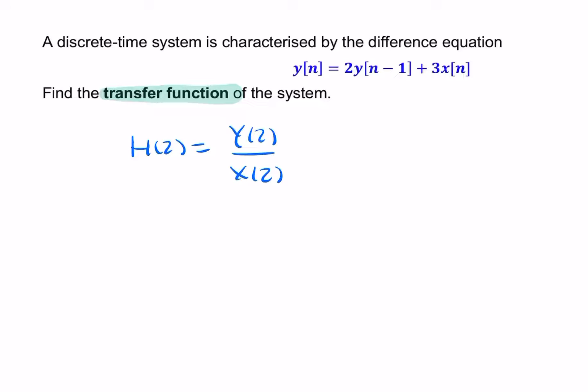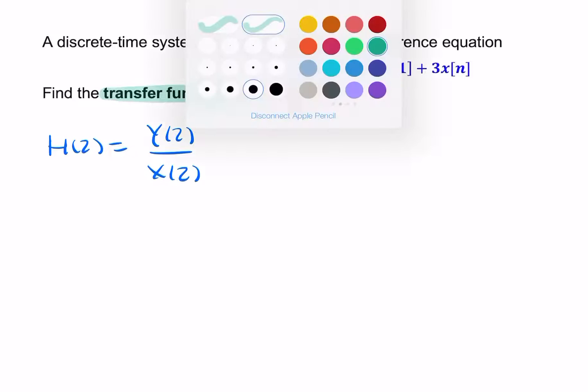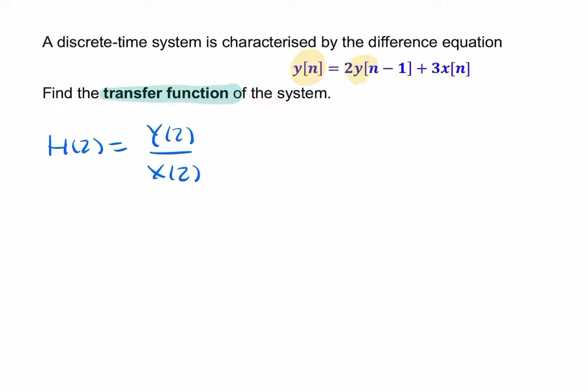So let's try taking the z transform of each term. Remember, z transform is a linear process, so we're allowed to do that. I can take the z transform of each of these terms. So the z transform of y of n is simply y of z.